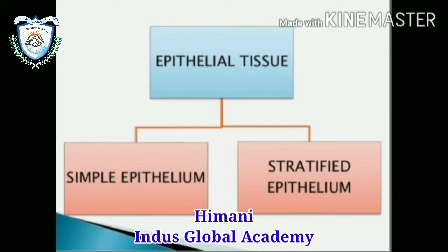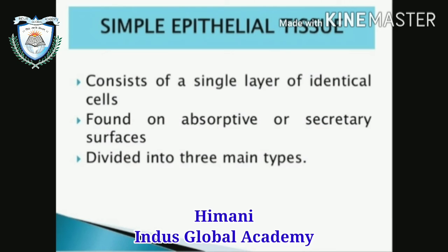Epithelial tissue is basically of two types: simple epithelium and stratified epithelium. Simple epithelium, as the name indicates, consists of a single layer of identical cells — the same type of cells are present — and is found on absorptive or secretory surfaces like the skin.